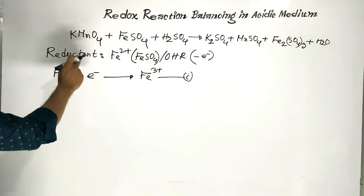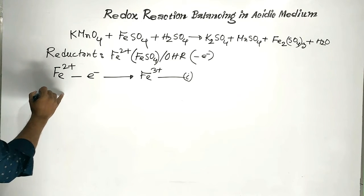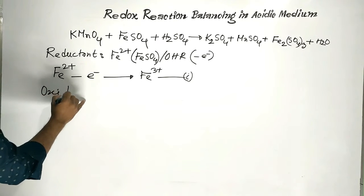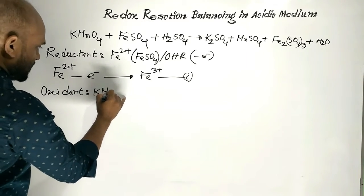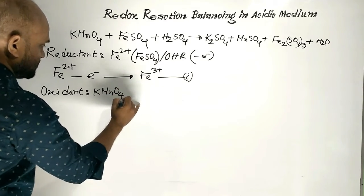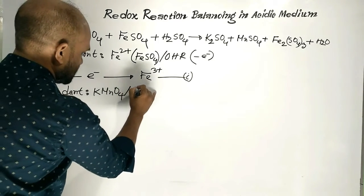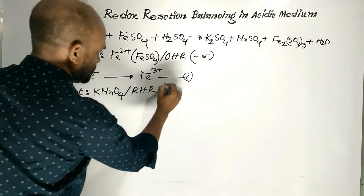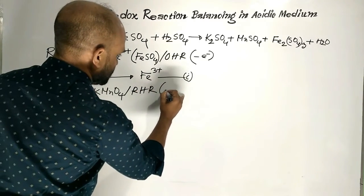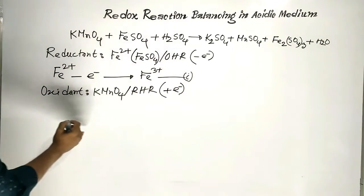Then, in this reaction, Potassium permanganate acts as the Oxidant. Because of Potassium permanganate, the reduction half-reaction occurs through reception of electrons in this way.